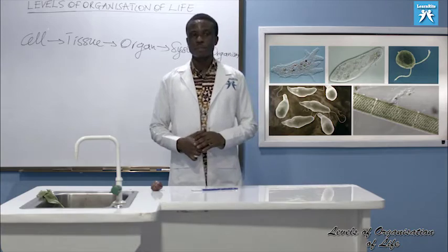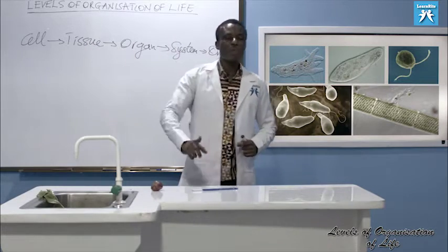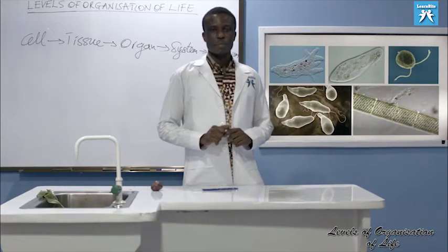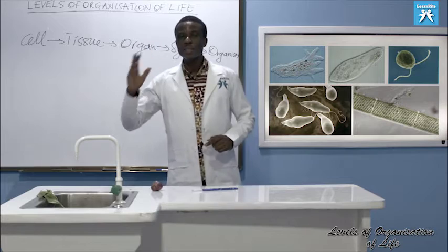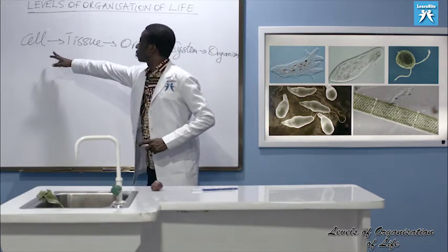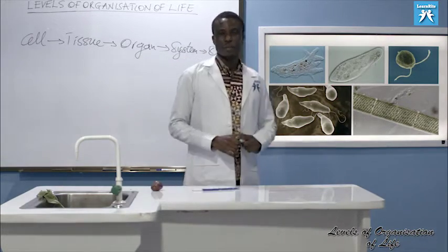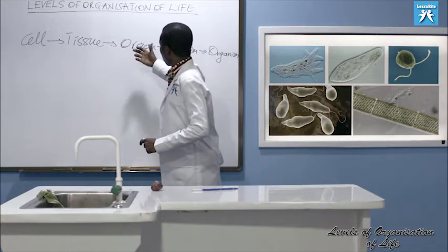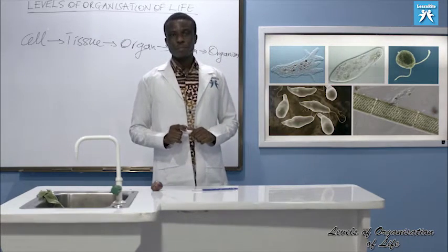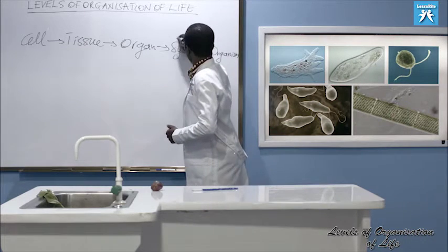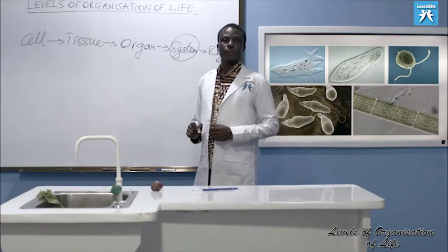Some organisms are made up of only one cell; they are said to be at the cellular level. Some organisms don't have organs but have more than one cell — the whole organism is made up of a tissue, so they are said to have life at a tissue level. Some organisms are in the form of an organ, while some are made up of systems — they are organisms.